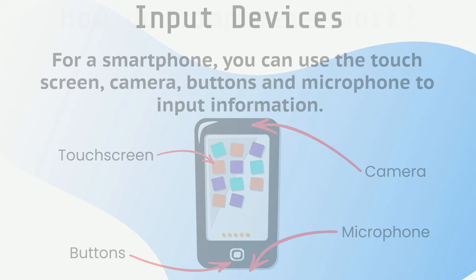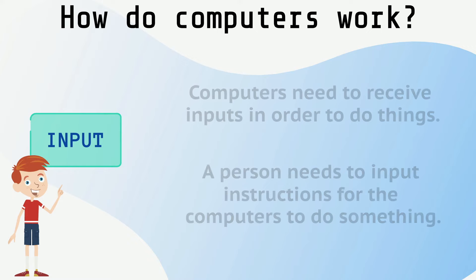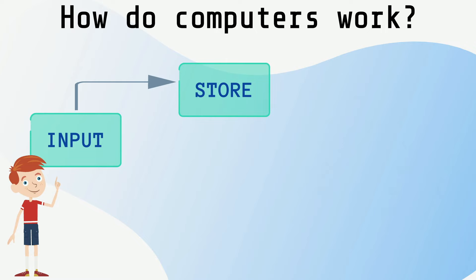Computers need to receive inputs in order to do things. A person needs to input instructions for the computers to do something. When a computer receives an input, it stores the information in its memory. While it's storing the information, it is also processing the instructions it just received.